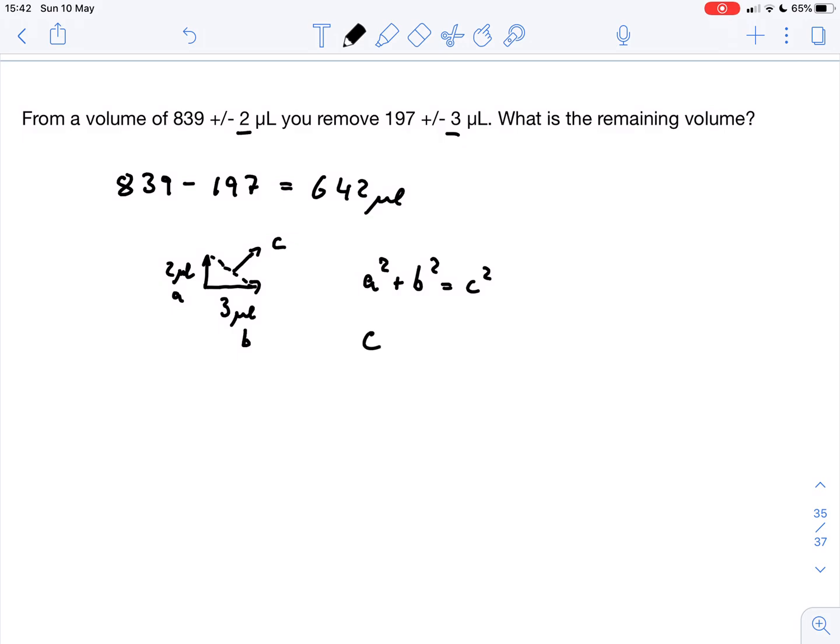So C is just simply the square root of A squared plus B squared. And we just simply put our uncertainties in here. So our combined uncertainty is the square root of 2 squared plus 3 squared, and that is square root of 4 plus 9, that gives 13.